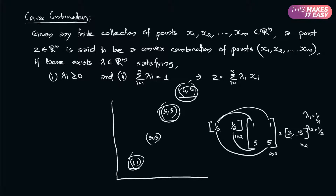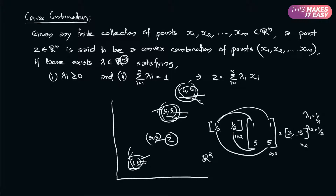Now let us read the mathematical definition. Given any finite collection of points x1, x2, till xm — in our example x1 through xm — that are elements in R^n space (in our case it was R^2), a point z that is also in R^n is said to be a convex combination of those points if there exist some lambdas. Basically, lambda is in R^m space, not in R^n space, because lambda depends upon the number of points, not the dimension of the point.